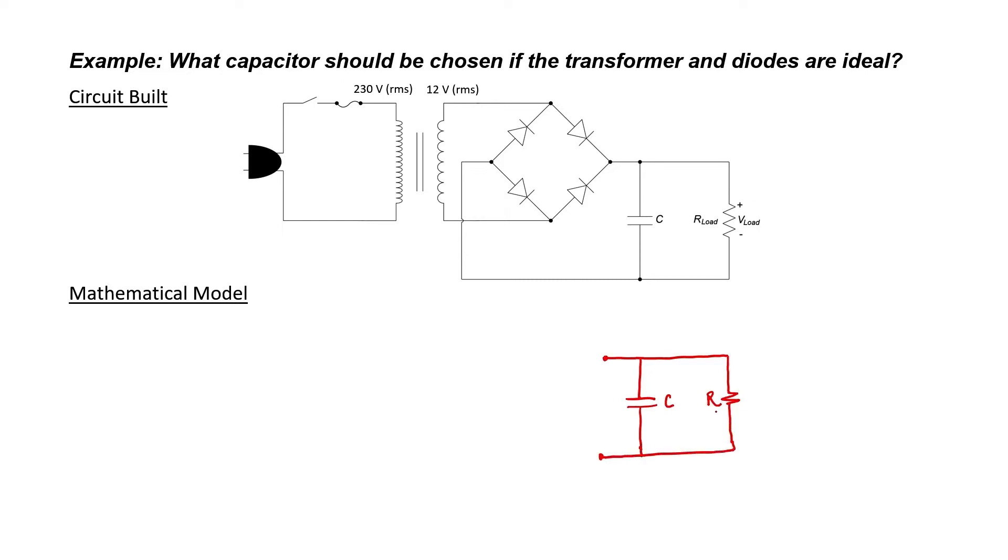What does it mean for a transformer to be ideal? Well, it means that the voltage here is going to be maintained at 12 volts irrespective of the load. Therefore, I can represent that transformer by a perfect voltage source. In this case, it's a perfect 12 volt RMS sinusoidal source.